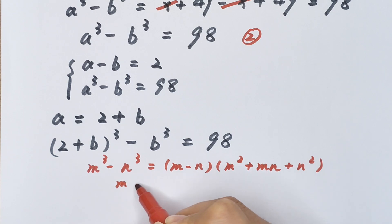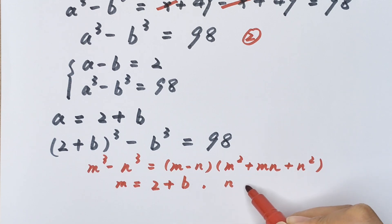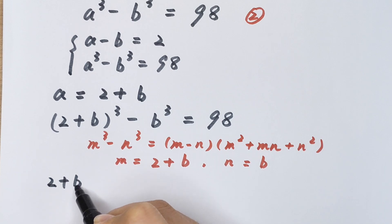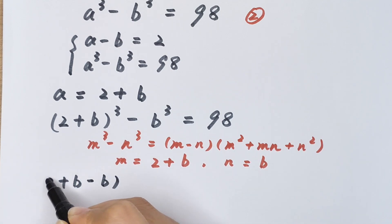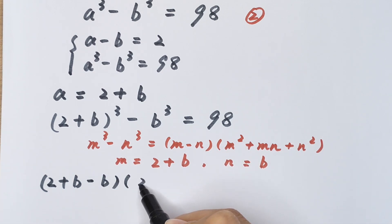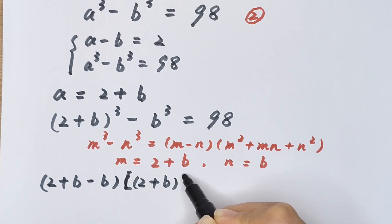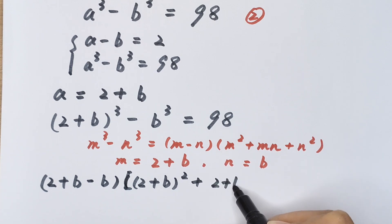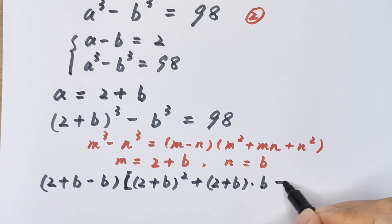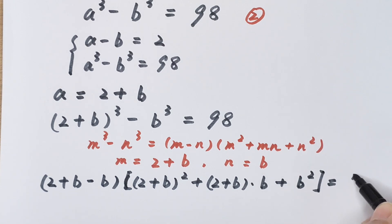We apply the difference of cubes formula: m³ minus n³ equals (m − n)(m² + mn + n²). Here m = (2 + b) and n = b, so (2 + b − b) times [(2 + b)² + (2 + b)(b) + b²] equals 98.